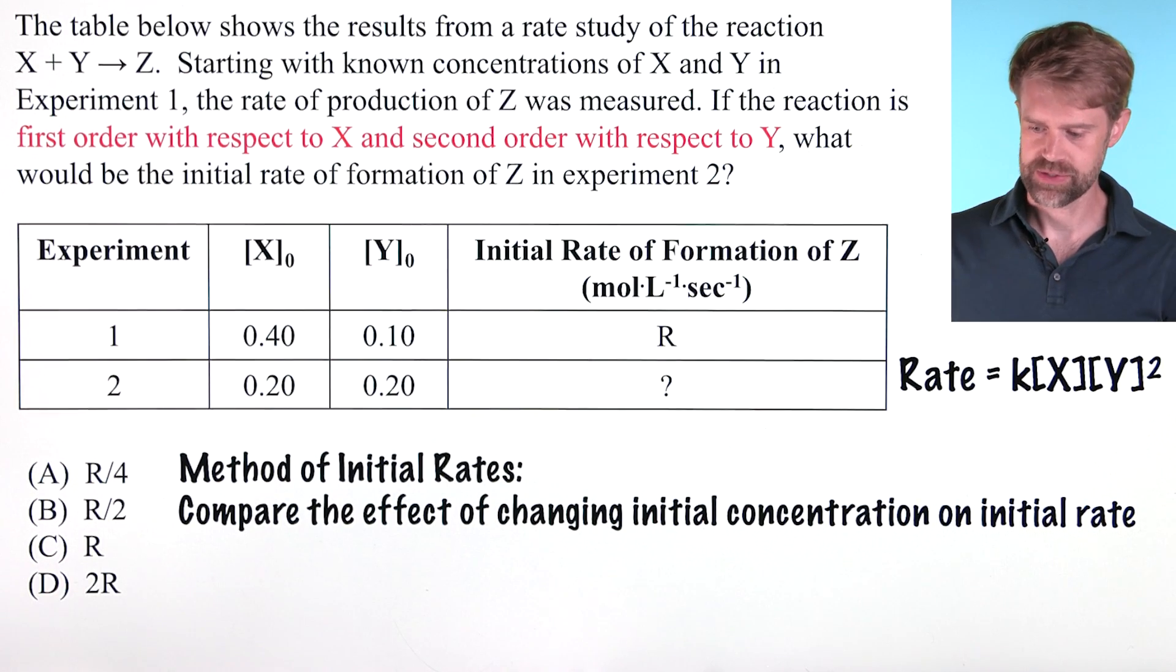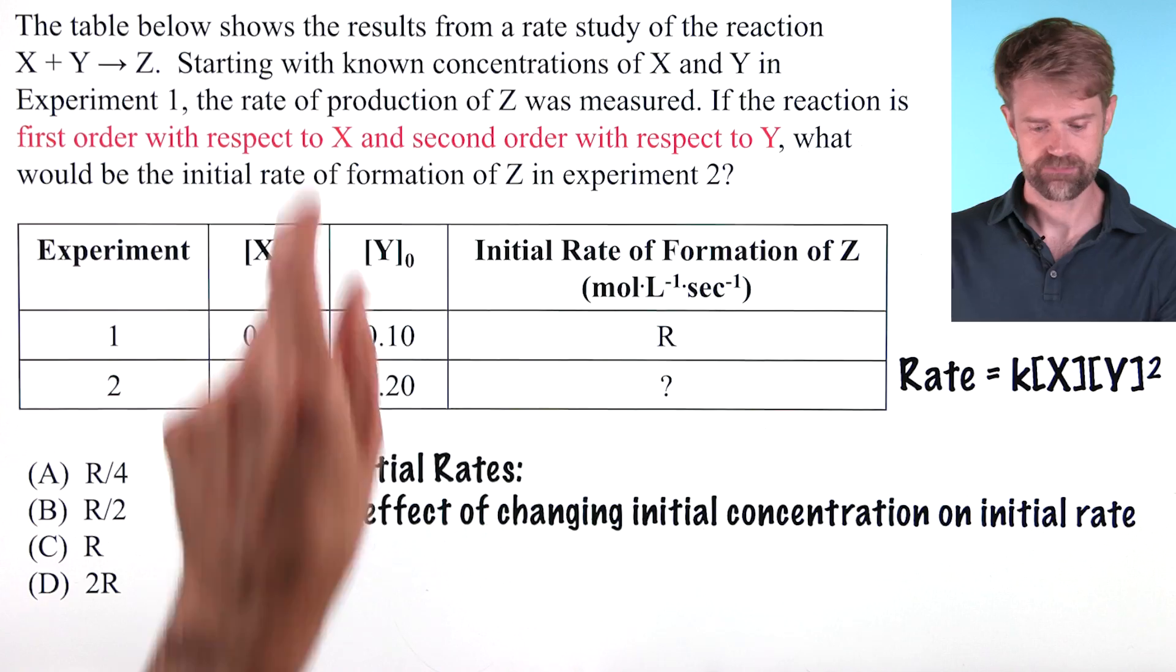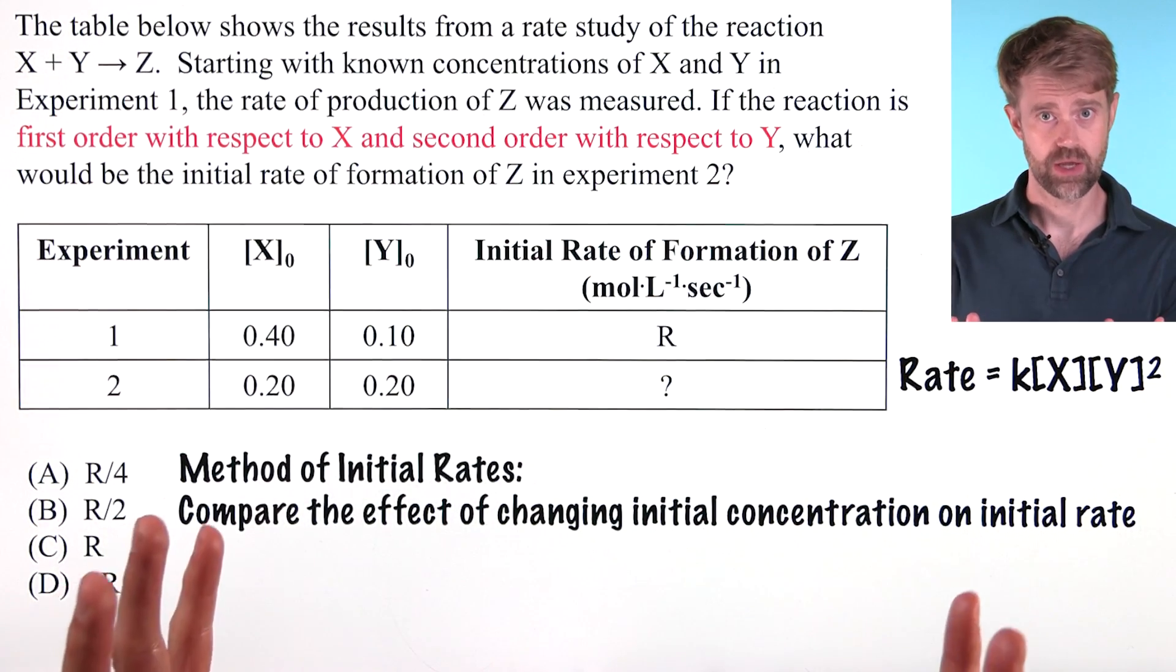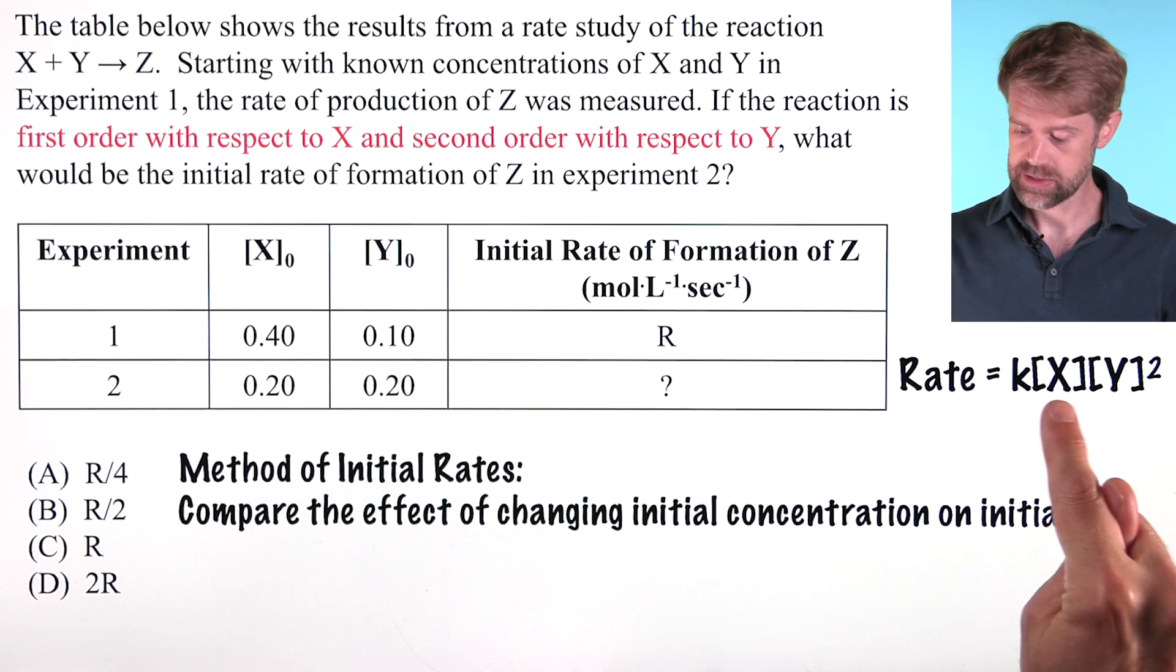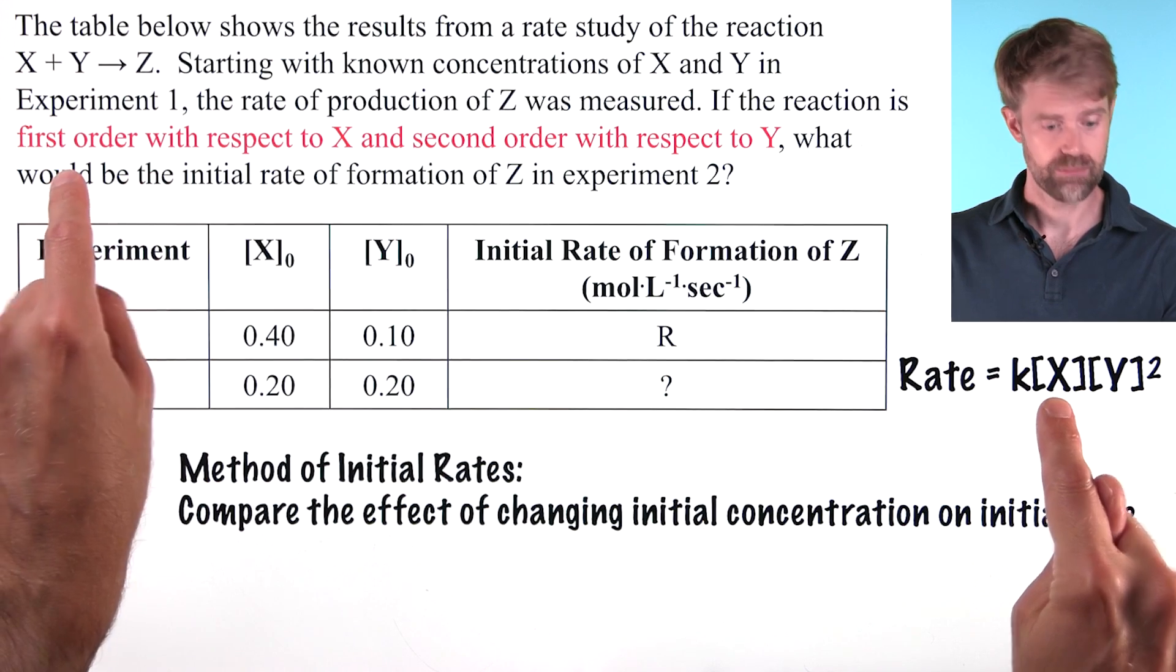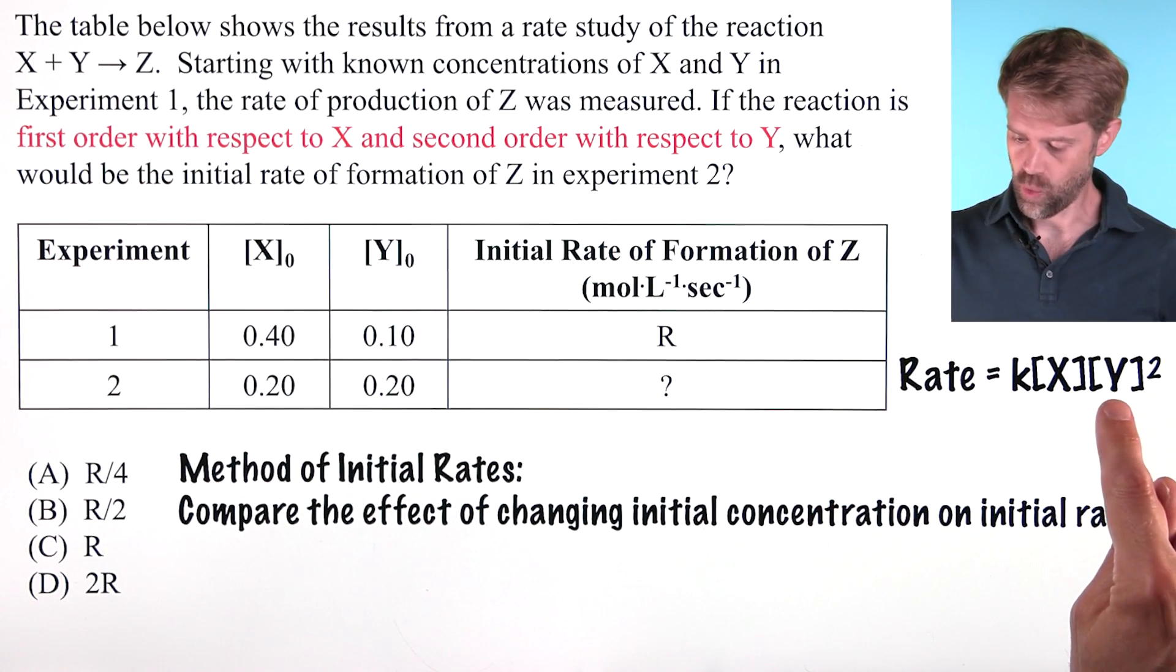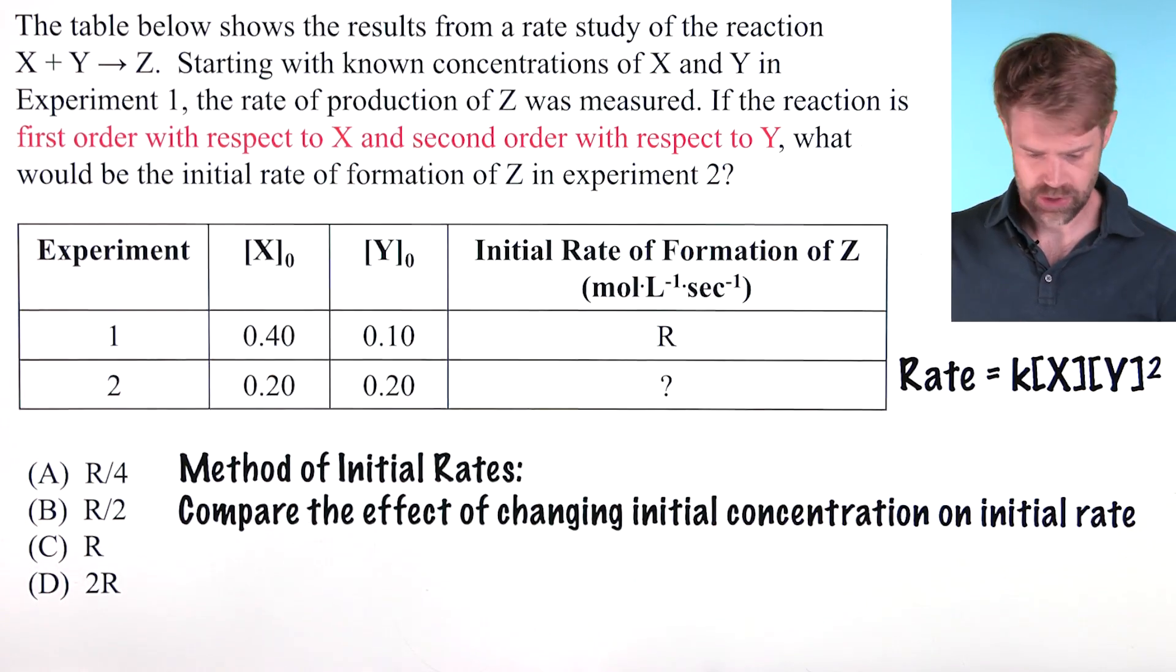This question tells us that the reaction is first order with respect to X and second order with respect to Y. That means that the rate equation is going to be rate equals K times X to the first, but of course we don't write the first there, times Y to the second for second order. So there's our rate equation.